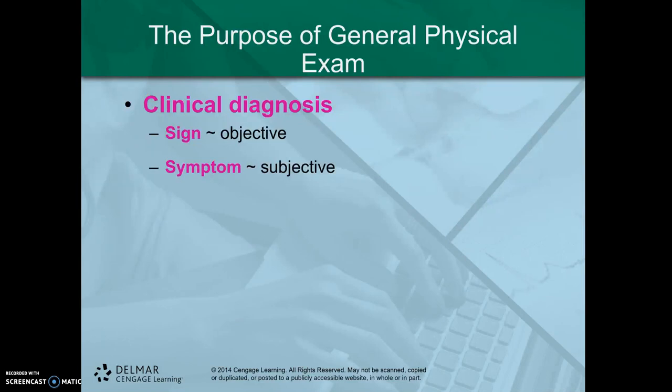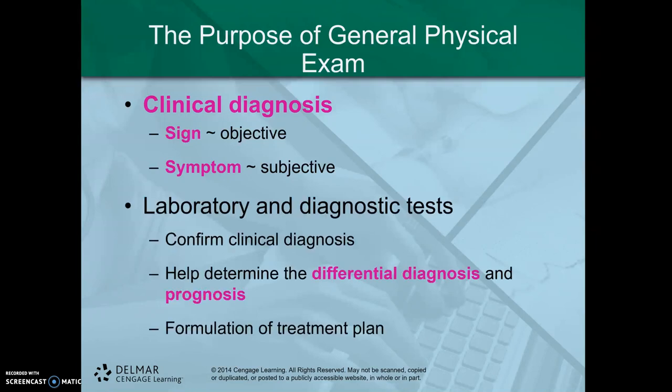So we have talked about objective versus subjective already. Just as a recap, objective are things you can see, measure, or physically prove, while subjective are all those things that the patient says that you have no way of proving. We refer to objective things as signs and subjective things as symptoms. So a symptom of a disease is the subjective component and the signs of a disease is the objective component.